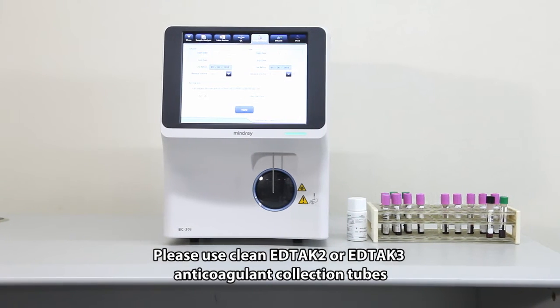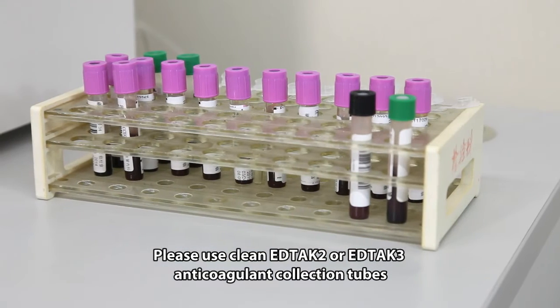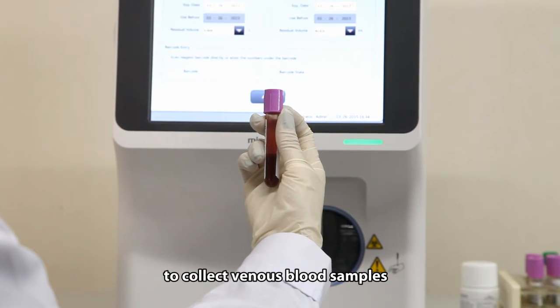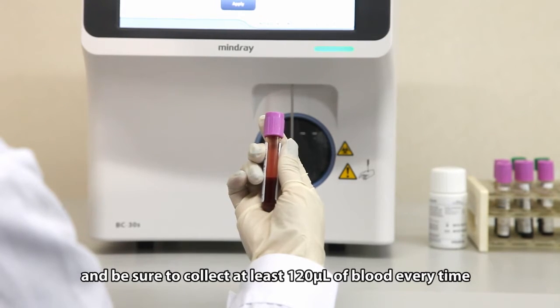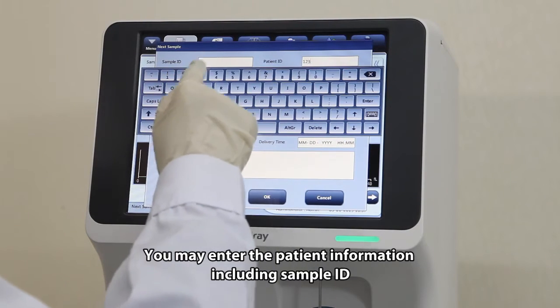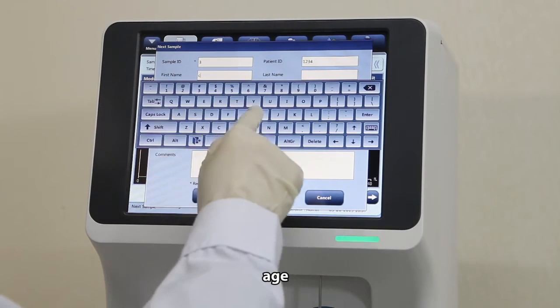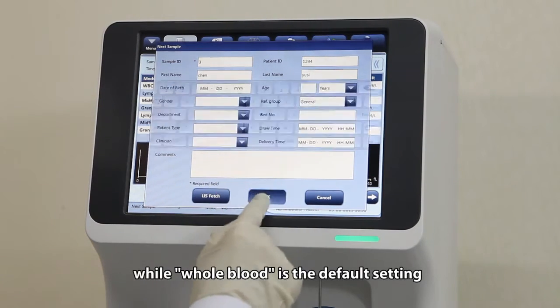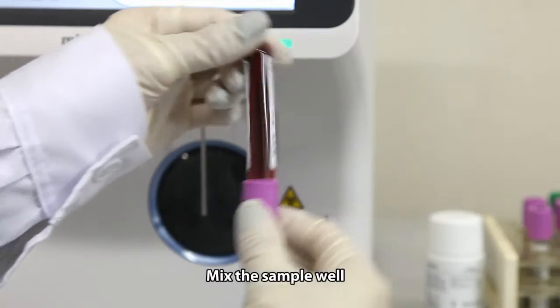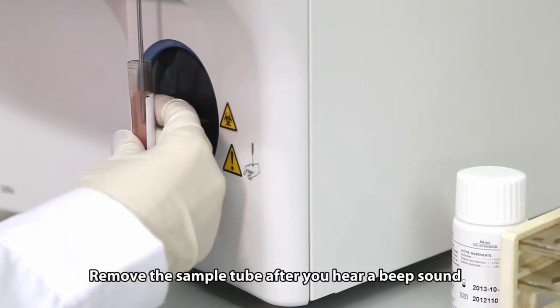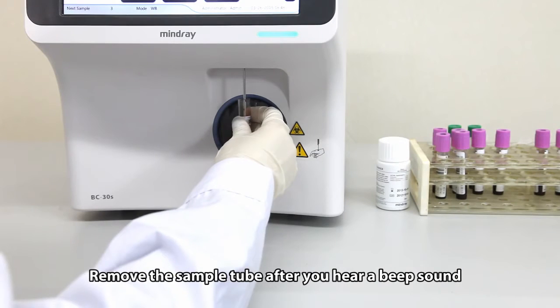Please use clean EDTAK-2 or EDTAK-3 anticoagulant collection tubes to collect venous blood samples and collect at least 120 microliters of blood every time. You may enter patient information including sample ID, name, age, gender, while whole blood is the default setting. Mix the sample well and run it through the sample probe. Remove the sample tube after you hear a beep sound.